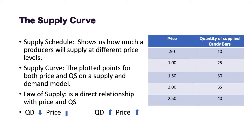Very important to note that a change in price is just movement along the curve. You can see if we change the price from $0.50 to $1.00, that's just movement down the supply schedule or movement along the supply curve. The law of supply: there is a direct relationship with price and quantity supplied. As quantity supplied goes down, price goes down. As quantity supplied goes up, price goes up.